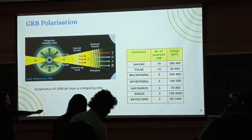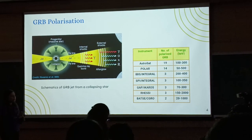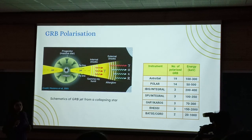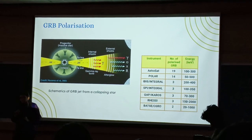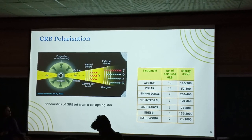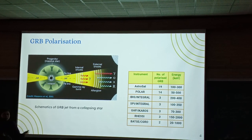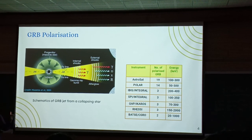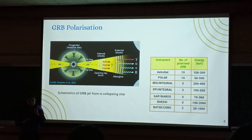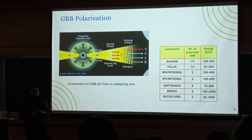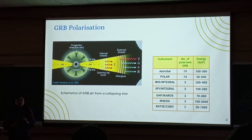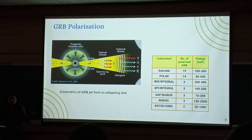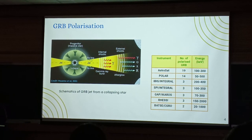These are all the GRB instruments since the very beginning, shown in particular energy ranges — look at the numbers. If we want to constrain the different models, a lot of spectroscopic and light curve studies have been done, but the only thing that can resolve between all the different GRB models is polarization. For that, we need a significant number of GRBs to be detected, which is why we need instruments like Daksha that will detect large numbers of GRBs and enable large numbers of polarization studies.